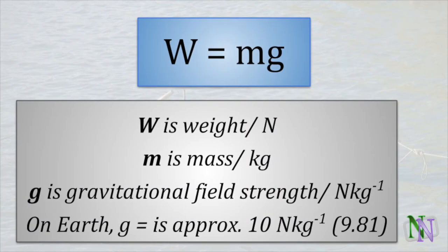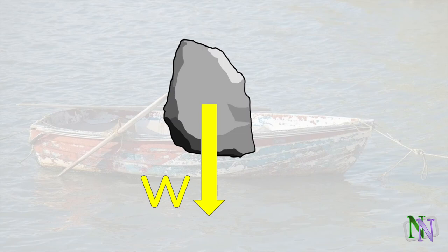W equals mg is the way we calculate the size of the force or weight W for a mass m. The gravitational field strength g at the Earth's surface is 9.81 newtons per kilogram, which tells us that every kilogram at the Earth's surface experiences a force of approximately 10 newtons. So, for example, a mass of 82 kilograms has a weight of 820 newtons, if we assume g is 10 newtons per kilogram. We draw the force of weight from the center of gravity of the body towards the center of the Earth, which is usually vertically downwards in a diagram.